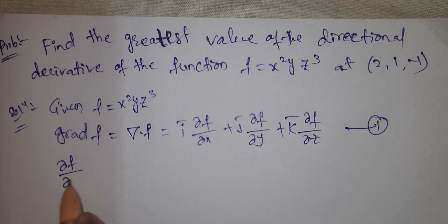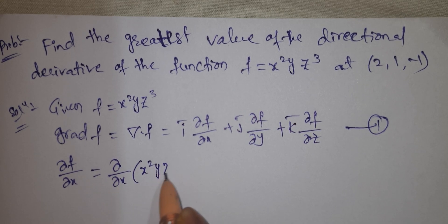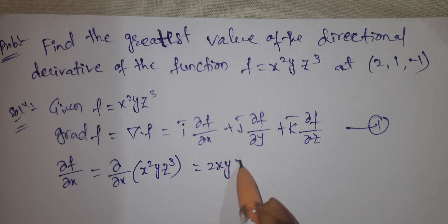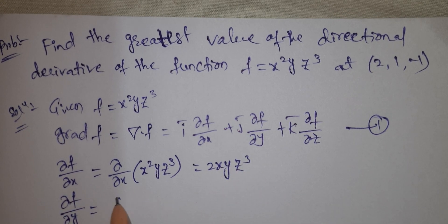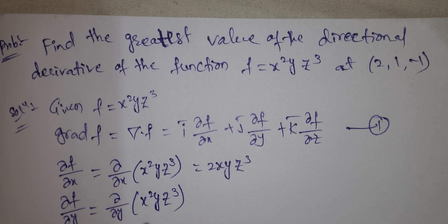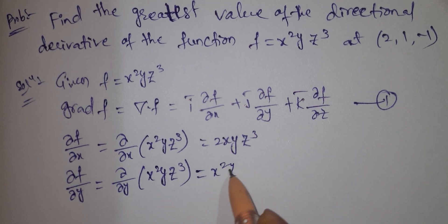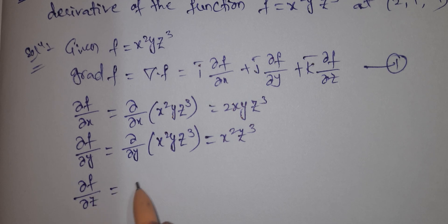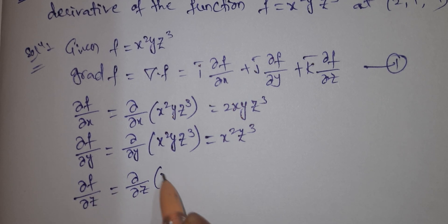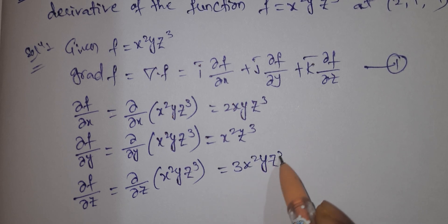∂f/∂x equals ∂/∂x of x squared yz cubed equals 2xyz cubed. Next, ∂f/∂y equals ∂/∂y of x squared yz cubed equals x squared z cubed. ∂f/∂z equals ∂/∂z of x squared yz cubed equals 3x squared yz squared.